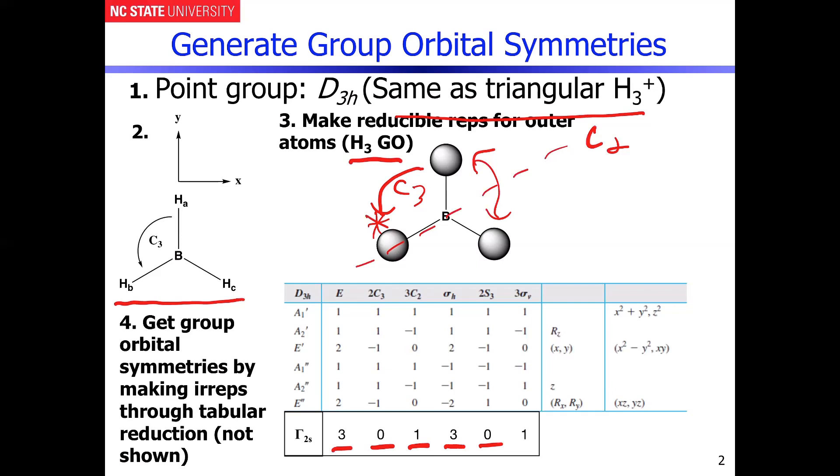And then the sigma V planes are actually exactly parallel with all of the C2 rotational axes. So effectively, one of the sigma V's is sitting right there. And the same thing happens that you would see in the C2 operation - you'd get the interchange of those two atoms, and then that one would stay fixed, giving you a character of 1.